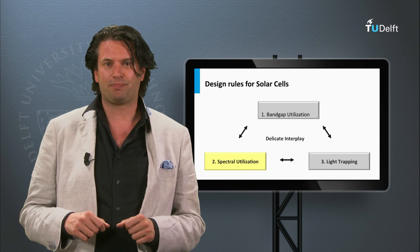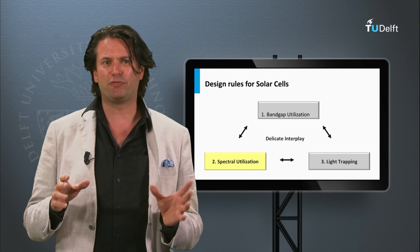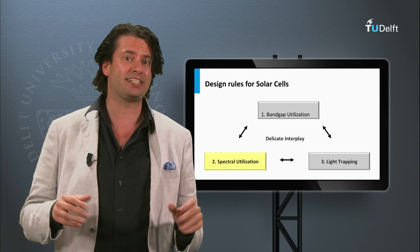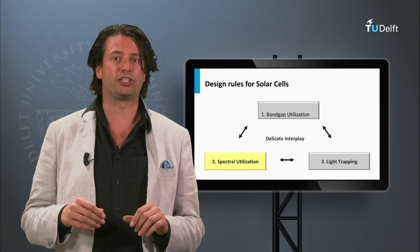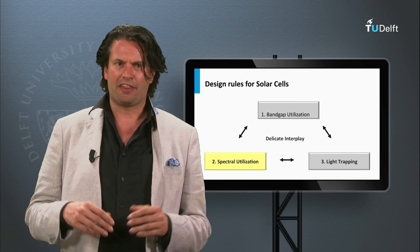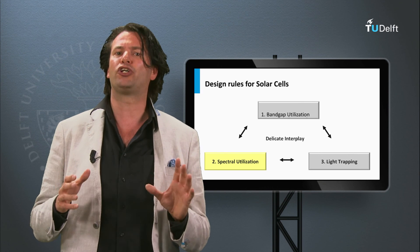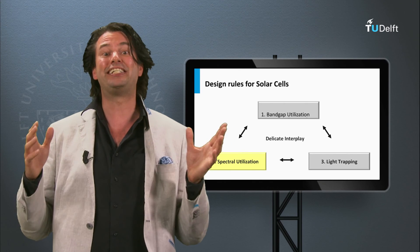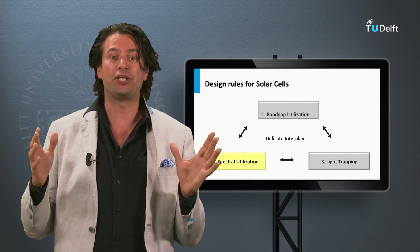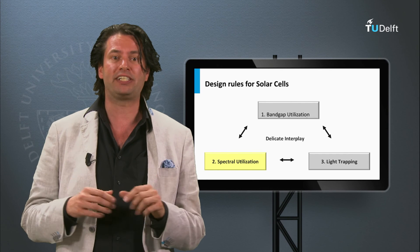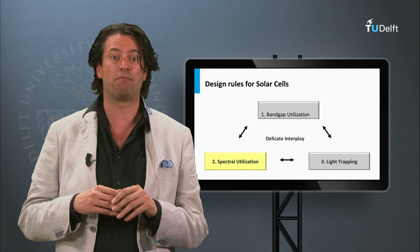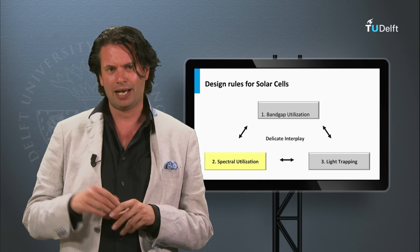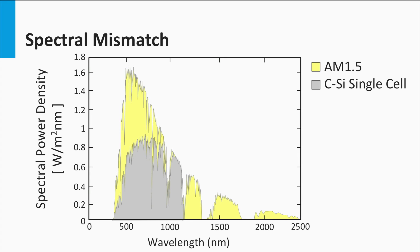For a single junction solar cell, the band gap of the semiconductor material determines the theoretical maximum current density and the open-circuit voltage that can be obtained. Therefore, considering single junction solar cells, we arrive at the next question: What is the optimum band gap for the absorber semiconductor at which the highest conversion efficiency can be obtained using the AM1.5 solar spectrum? Let's find an answer to that question.